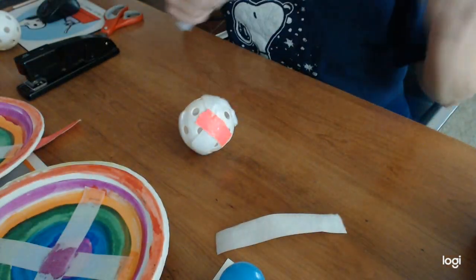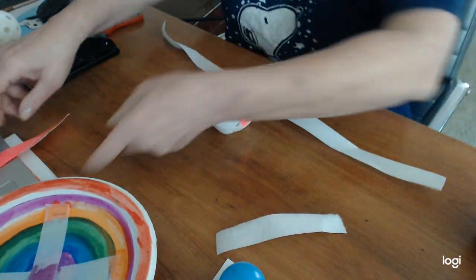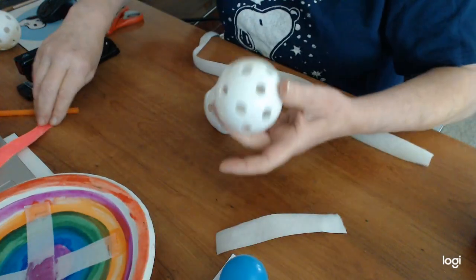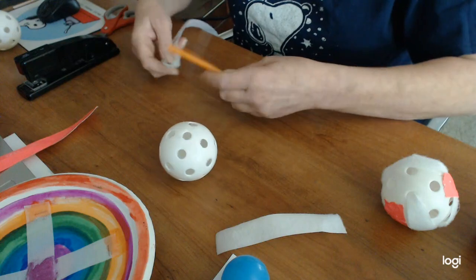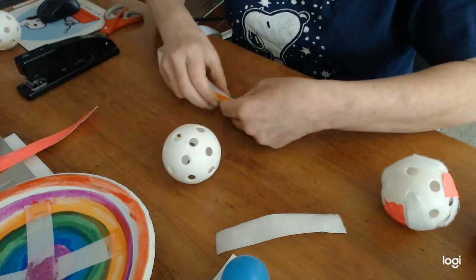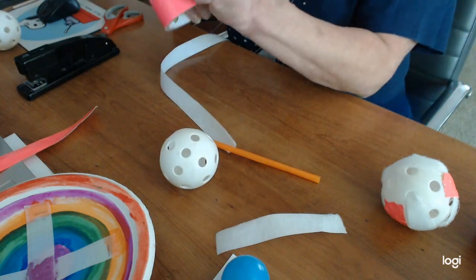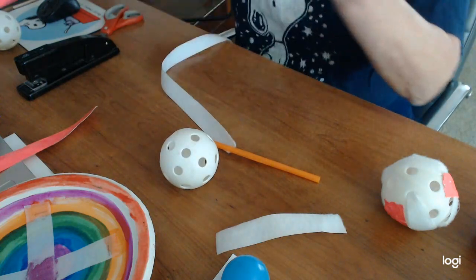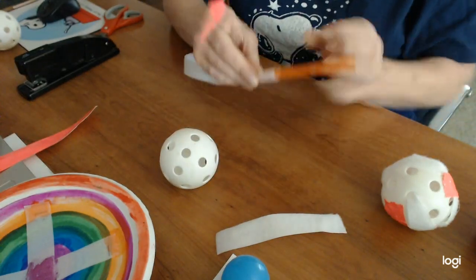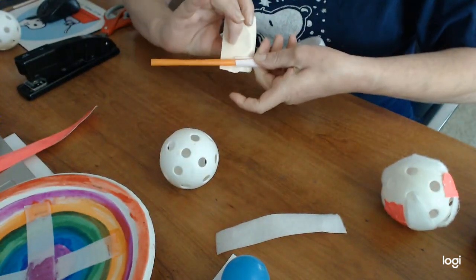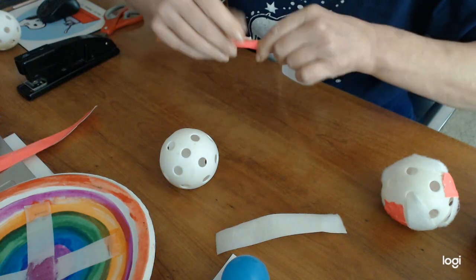What I did was I took a straw, and you'll notice the wiffle ball has holes all in it. I took the fuzzy strip and laid it on the straw. I'm going to make a sewing needle of sorts with this, so I'm just going to grab that and go around.